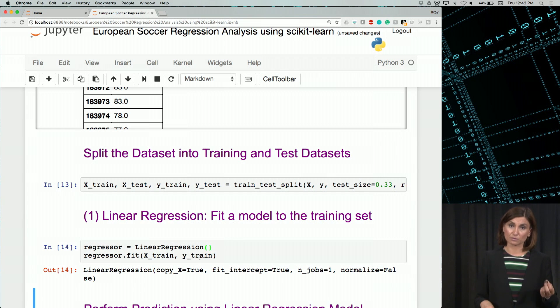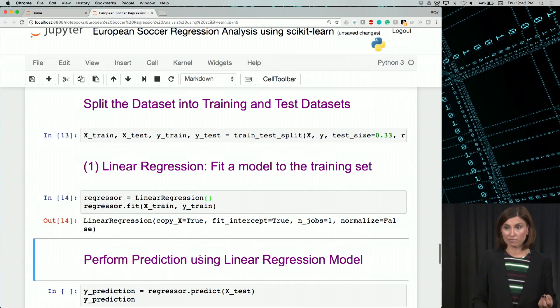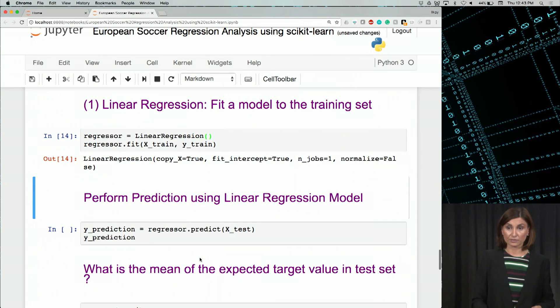We can then use this predict method because we now have a model, a linear regression-based model. We'll use the predict method of that trained model to perform the prediction on the test set, which is our x_test.